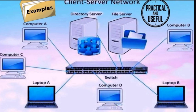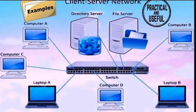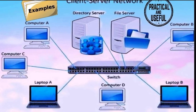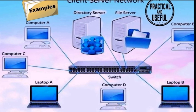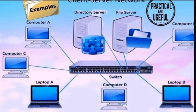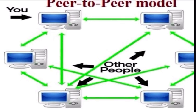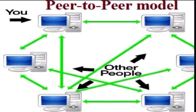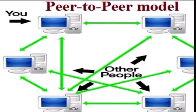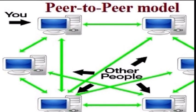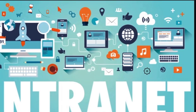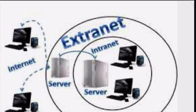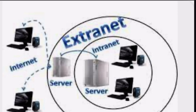Number six, the client-server network. In this model, computers or clients request services or resources from a central server. Common in business environments for tasks like file storage and email. Number seven, peer-to-peer network. In a peer-to-peer network, devices communicate and share resources directly with each other without a centralized server. This is common in small networks or for file sharing. Number eight, the intranet and the extranet. An intranet is a private network within an organization accessible only to its members, whereas an extranet allows limited access to authorized external parties.